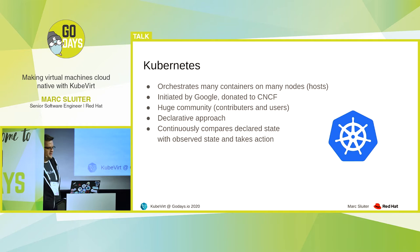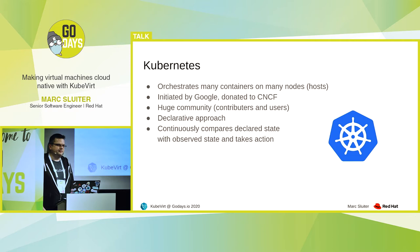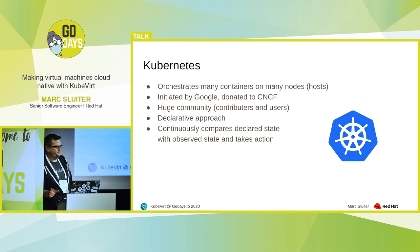Kubernetes orchestrates many containers on many nodes. It was initiated by Google based on their experiences in their data centers, where they were using containers for a long time already. And the project was donated to the Cloud Native Computing Foundation. It has a really huge community nowadays, both for contributors and for users. And the main thing about Kubernetes is that it uses a declarative approach — you declare what you want to have running in your cluster, and then Kubernetes continuously compares this declared state with the observed state and takes action to reach it.